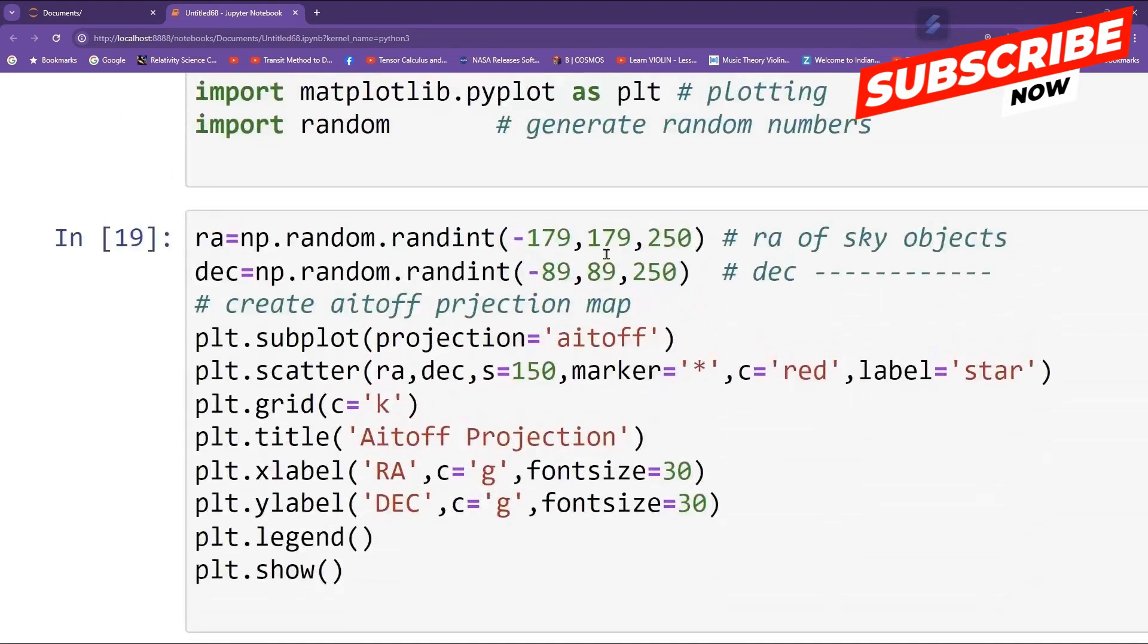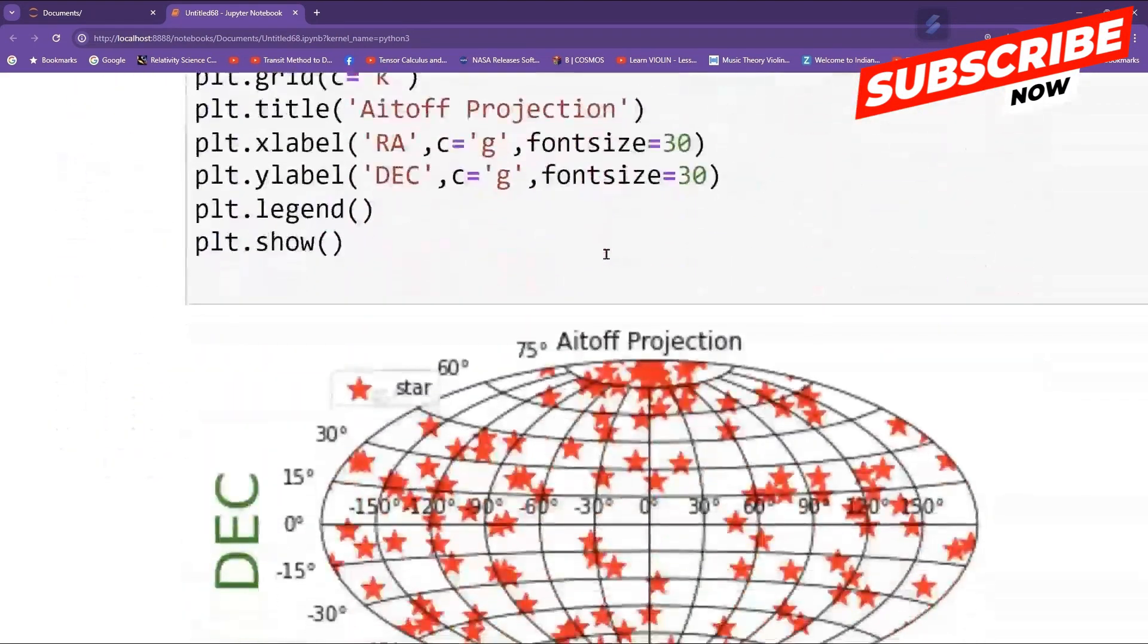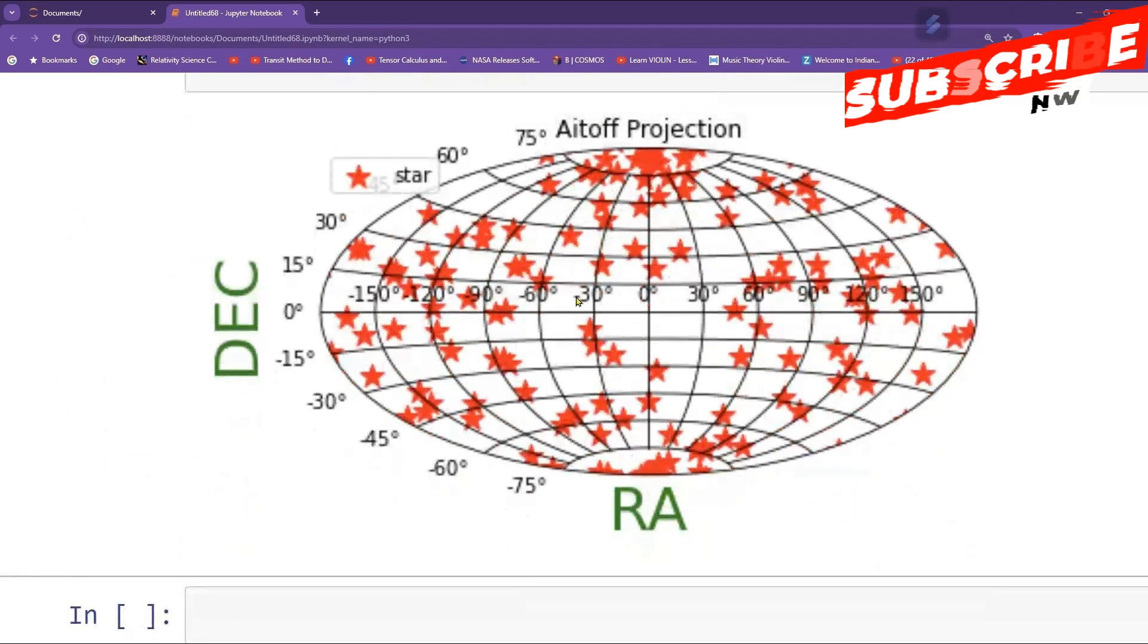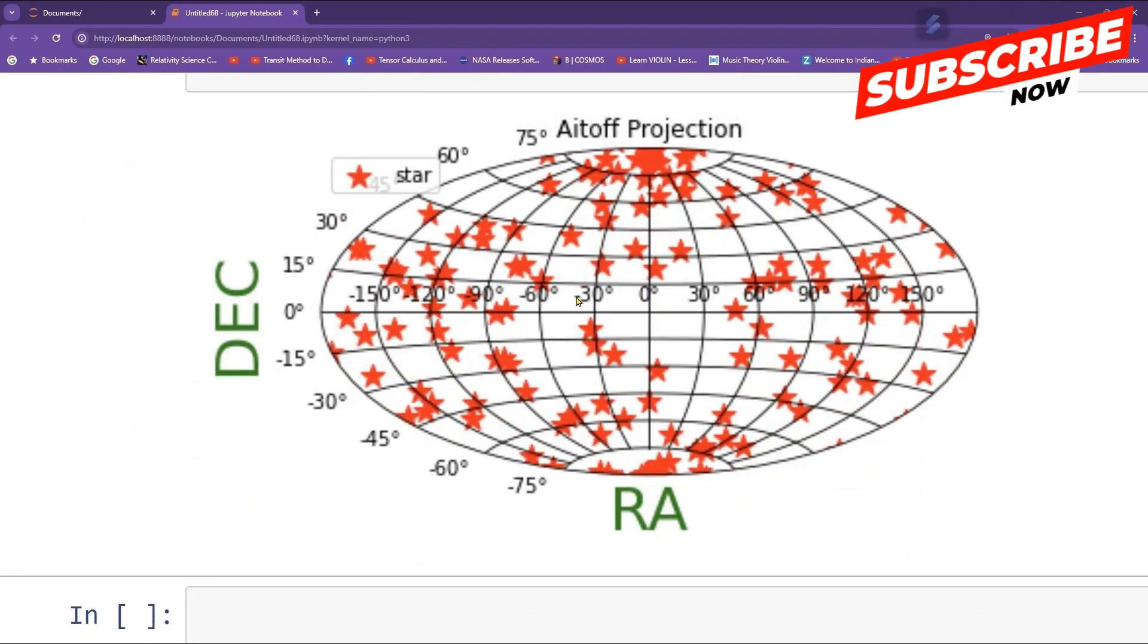Here is the code. It is a simple code. And here is the result. So I hope you got the idea that how to make Aitoff projection sky map for a given RA and DEC of the sky objects. Thank you.